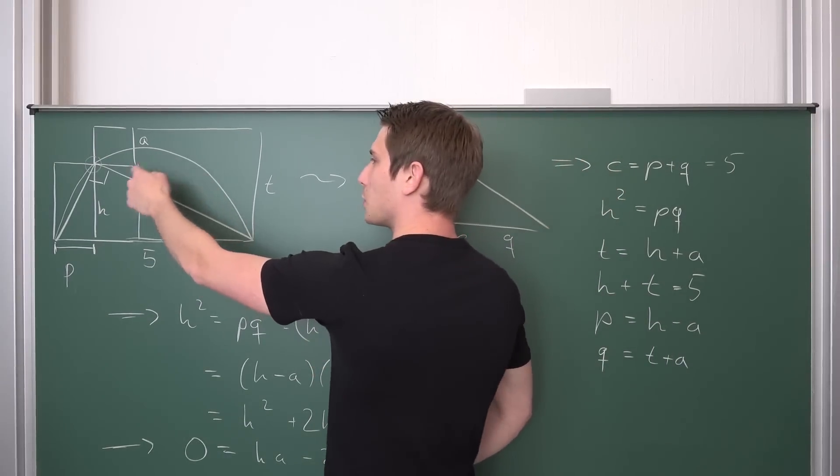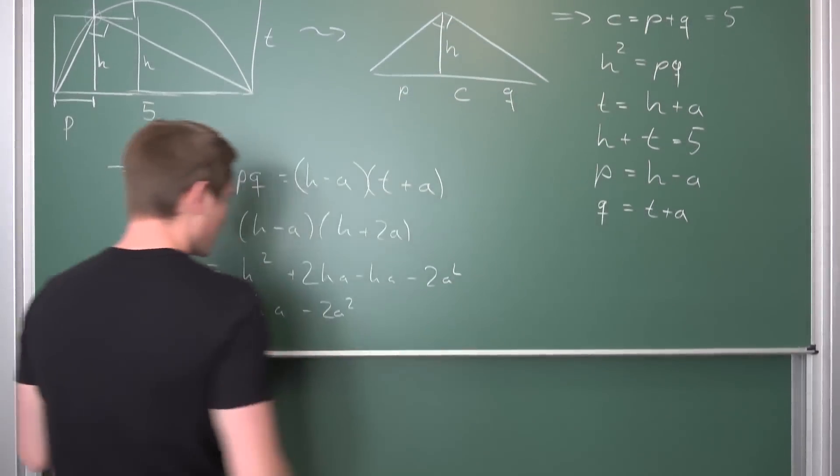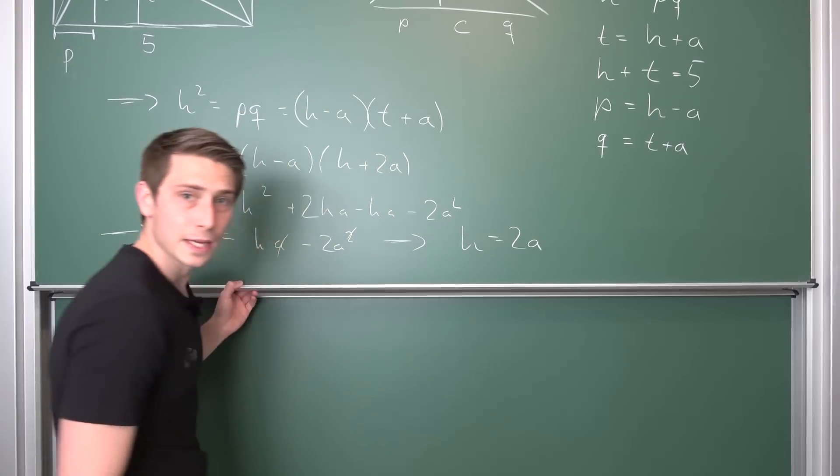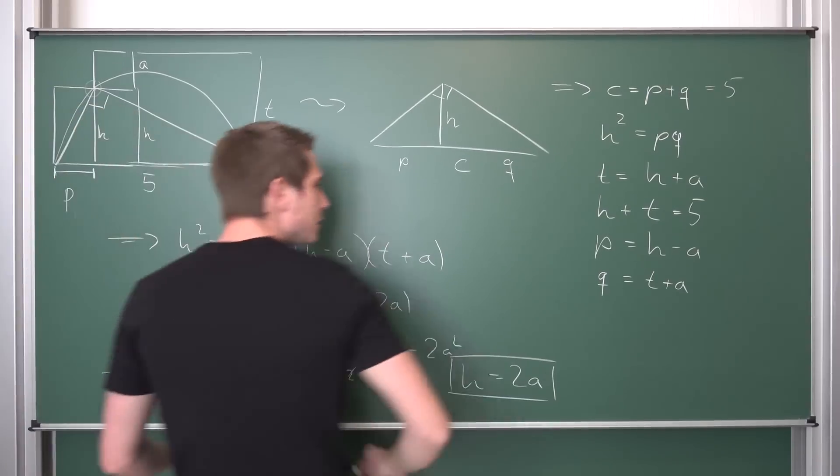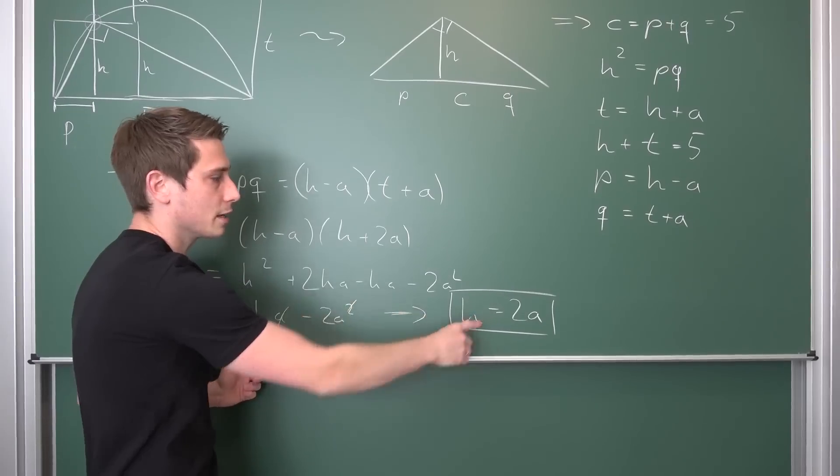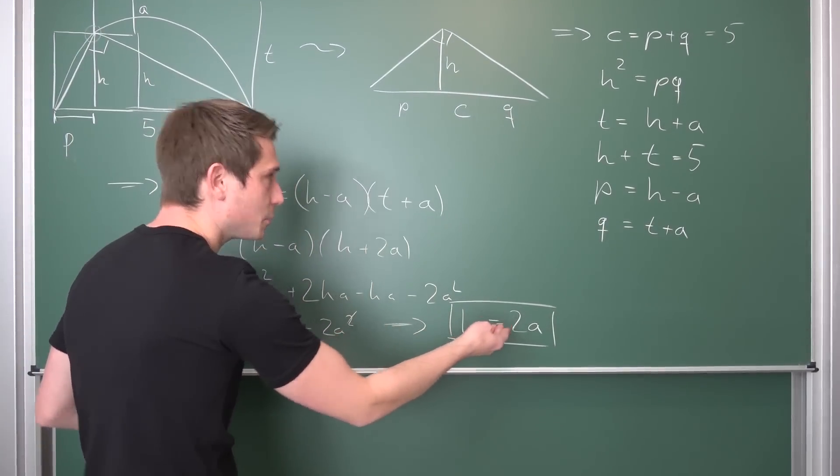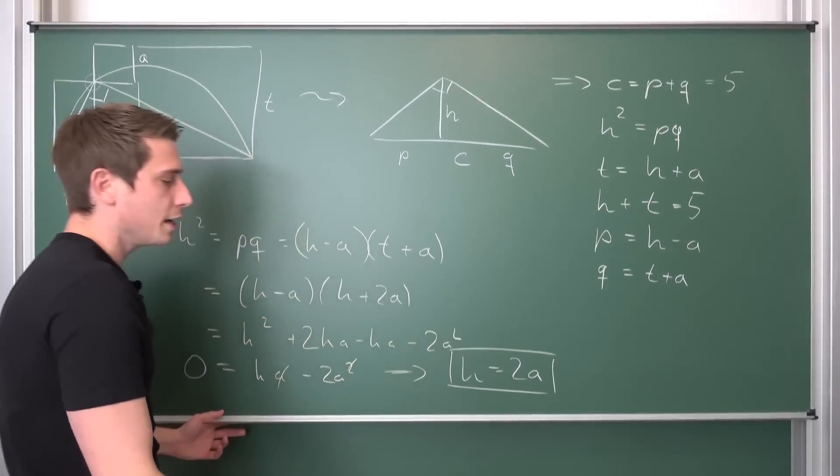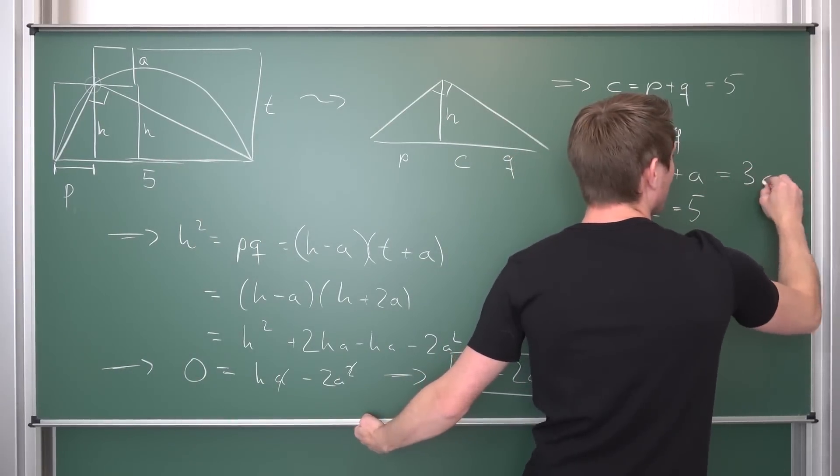Suppose a is not equal to 0. If a were equal to 0, this problem would be minimized. A is not equal to 0, so we can divide both sides by it. We get H equals 2 times a. This is a lot of information. We now have the connection that H is 2a. We also need something for T. We have T equals H plus a. If we plug in H equals 2a, we get T equals 3a.